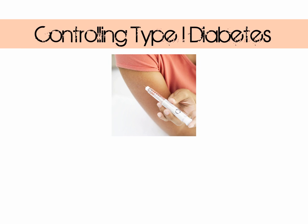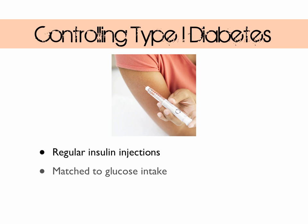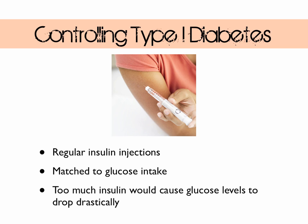Type 1 diabetes is also known as insulin dependent diabetes because it is controlled by regular insulin injections. The insulin must be injected because it's a protein — if taken orally it would be digested before reaching the bloodstream. The amount of insulin injected is carefully matched to the individual's glucose intake, as too much insulin could drastically drop blood glucose levels and result in a loss of consciousness.